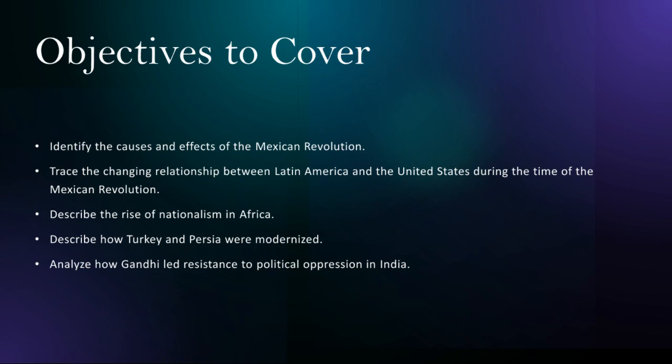In the early 20th century, Mexico was beset by political instability, economic inequality, and social injustice under the authoritarian rule of Porfirio Diaz. The revolution, sparked in 1910 by Francisco Madero's call for democratic reforms, evolved into a protracted conflict involving various factions, including peasants, workers, and regional leaders. The revolution resulted in the overthrow of Diaz, the establishment of a new constitution in 1917, and significant social and land reforms aimed at addressing the grievances of the Mexican people.